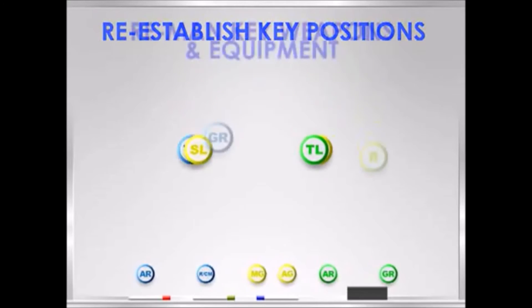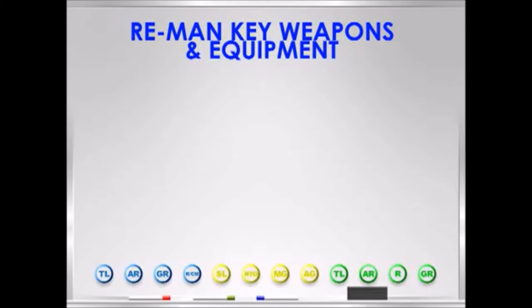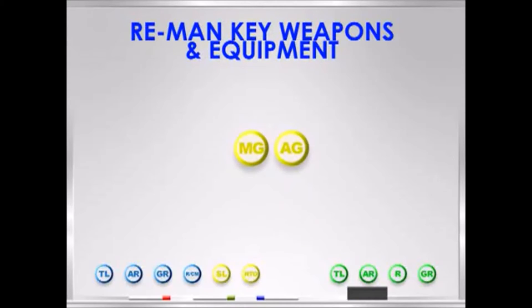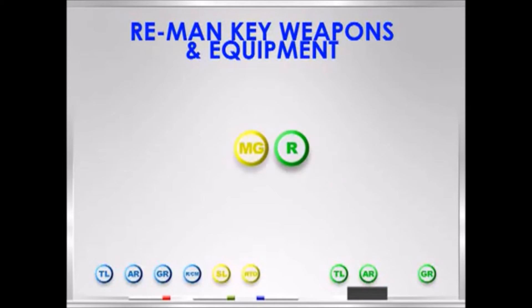Once the squad leader fills key positions, he ensures all key weapons and equipment are manned. For example, if a SAW gunner was wounded, the squad leader would ensure that the rifleman from that team mans the SAW and all associated equipment. Teams will always attempt to re-man weapons and equipment within their own team. If a team could not do this, the squad leader would direct that equipment be distributed to the other team. The squad leader must be aware of any weapon system or equipment distributed outside its original team. The M240 Bravo machine gun will remain with the gun team. If either member of the gun team is wounded or killed, a rifleman from either team will be assigned to fill in as the assistant gunner.